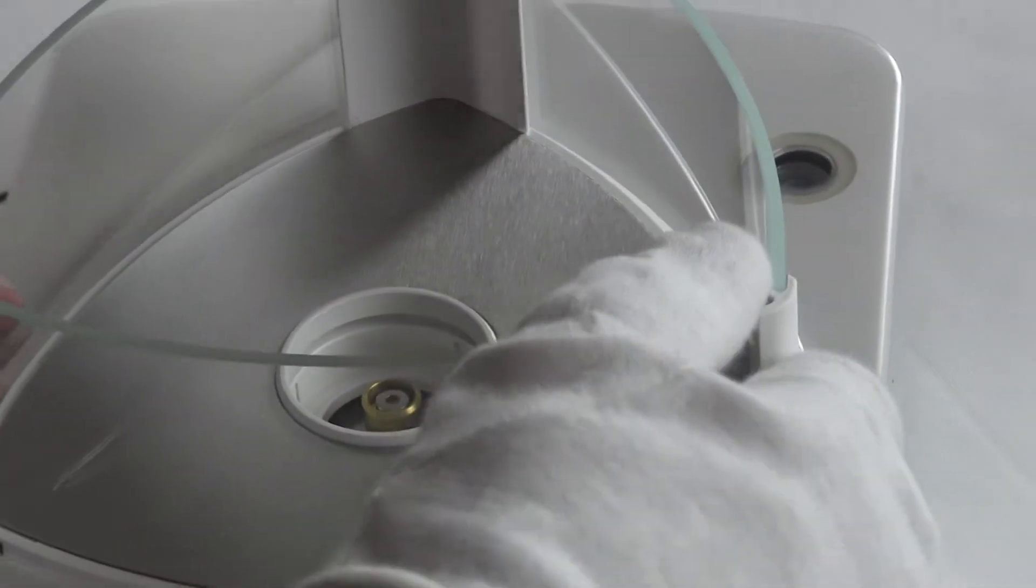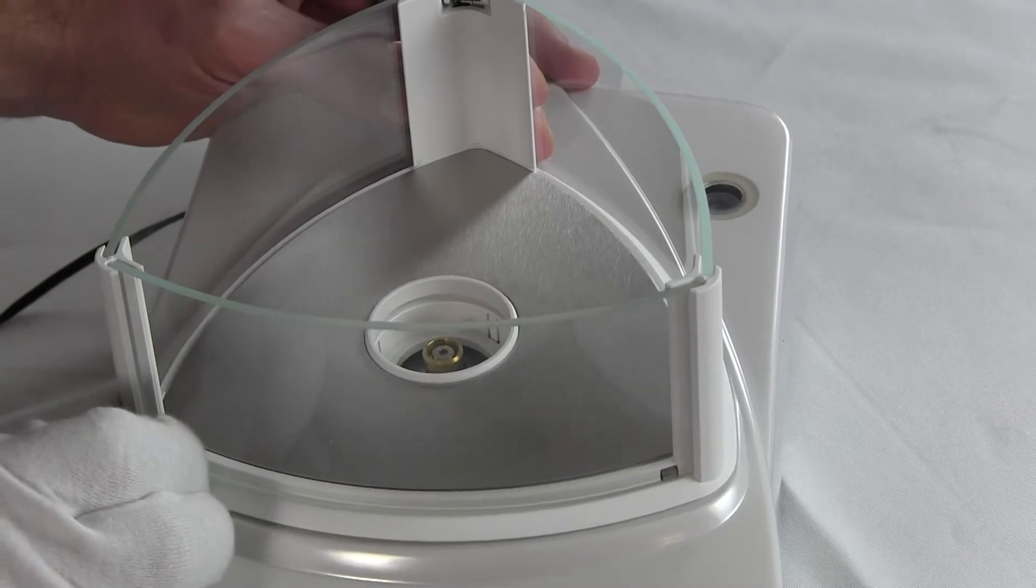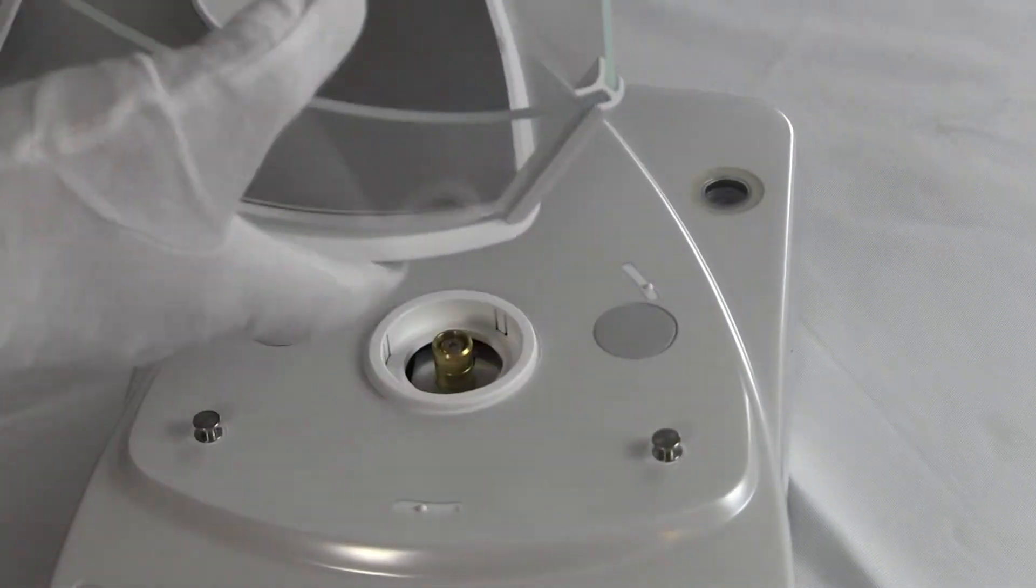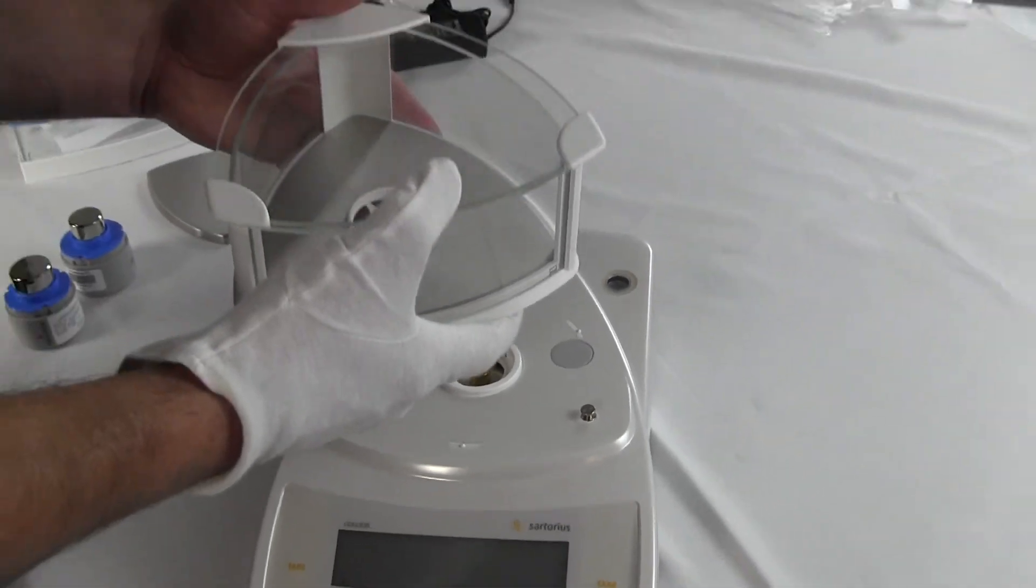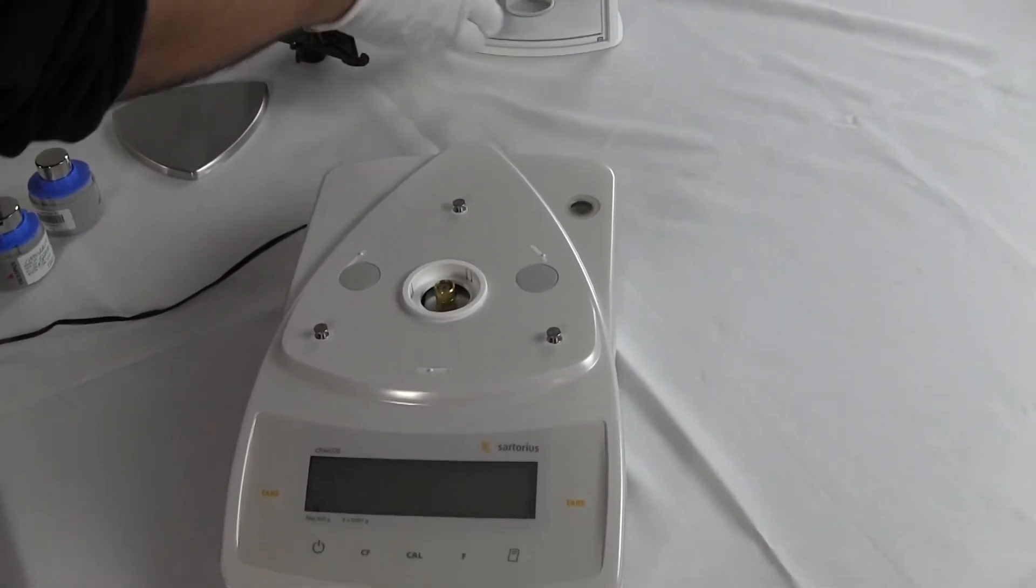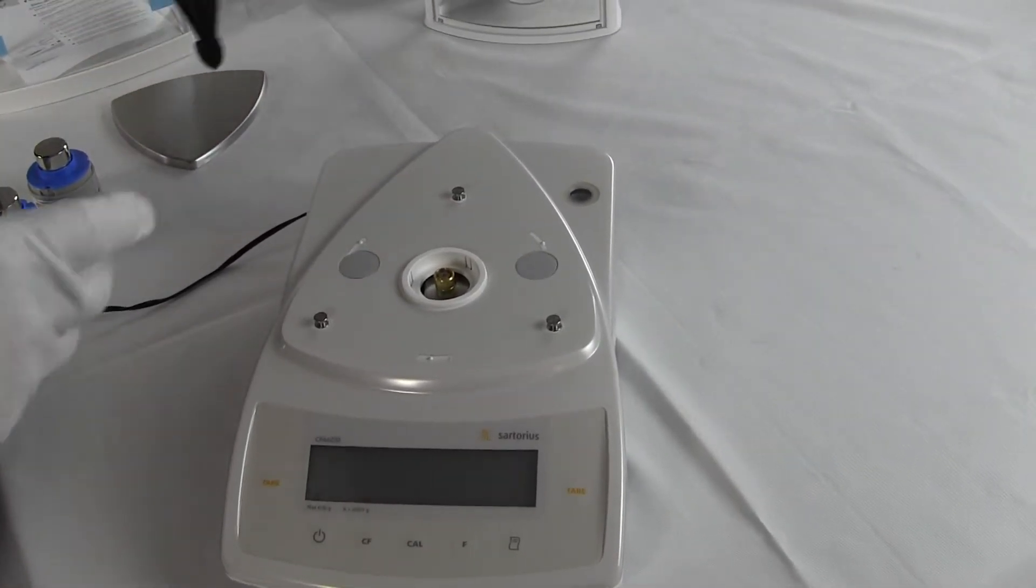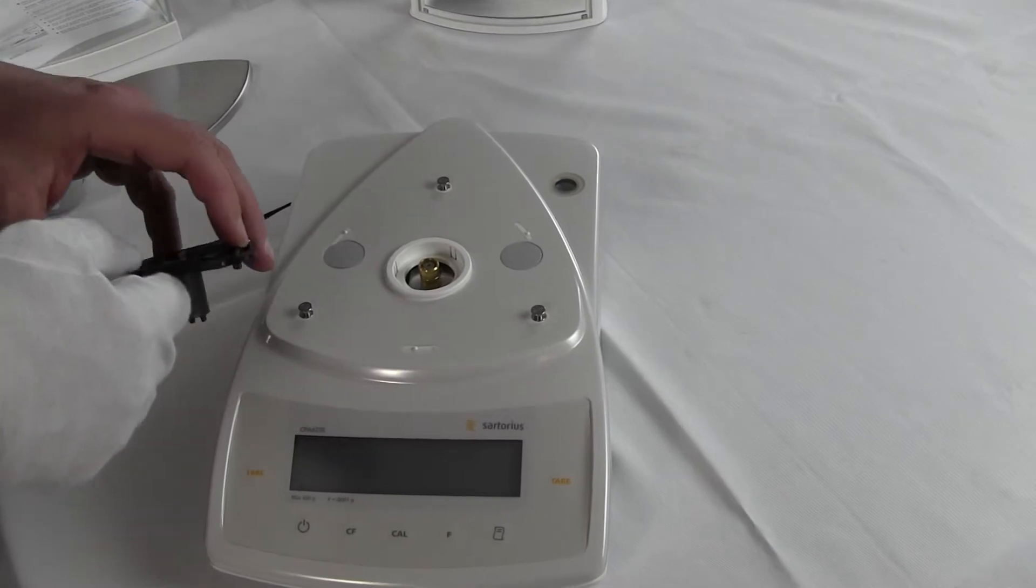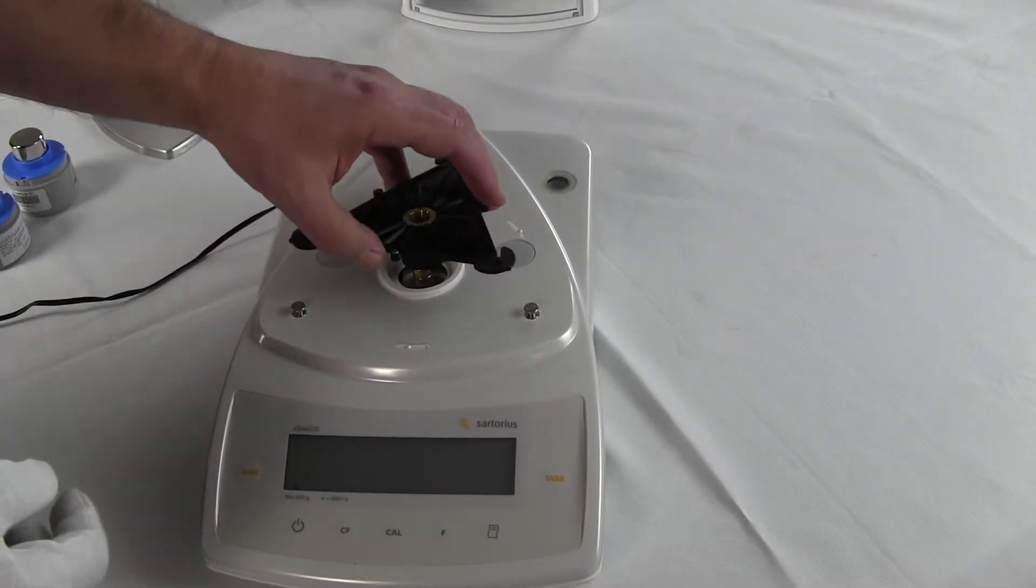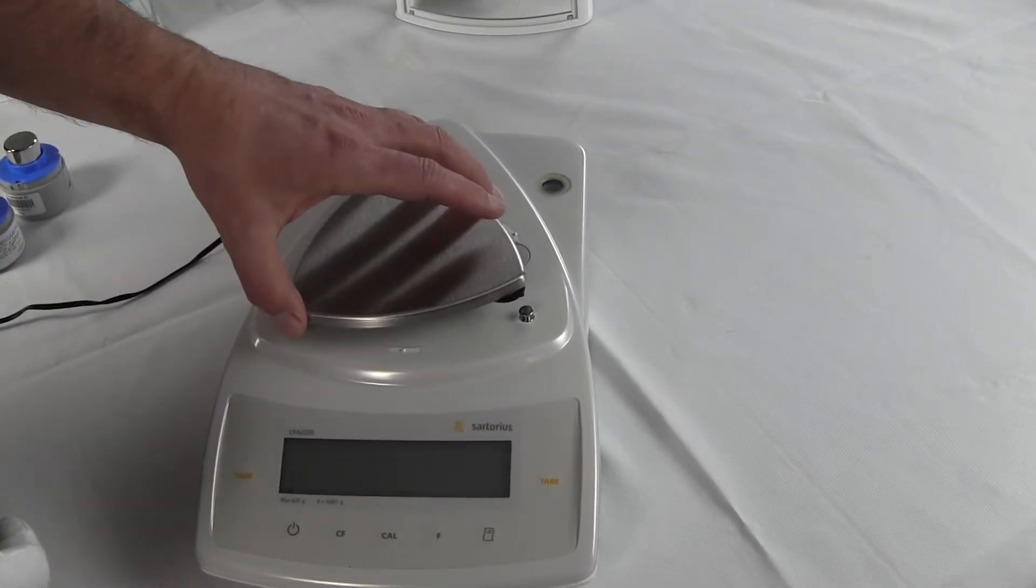Now on this draft shield, to disengage it, you need to turn the draft shield. And then the draft shield lifts right up. So this draft shield can be removed. And if the draft shield was in your way, say if you needed to weigh a large silicon wafer, like an 8-inch silicon wafer. If you had to, you could put this balance in a glove box and you could operate the balance by putting on the platform.